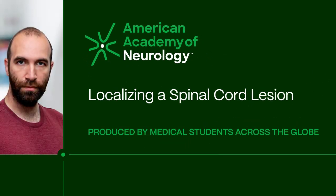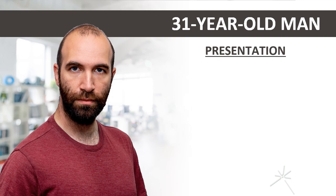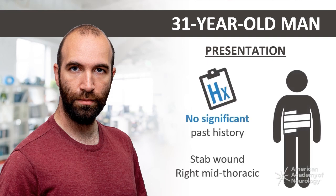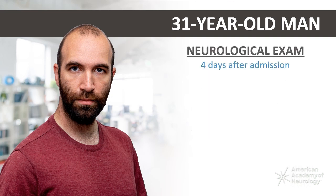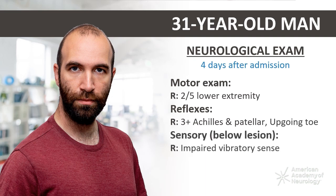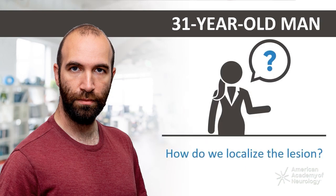Localizing a Spinal Cord Lesion. A 31-year-old man with no significant medical history presents to the hospital following a stab wound to the right mid-thoracic region. A few days later, once the patient is stabilized, a neurological exam shows 2 out of 5 strength in the right lower extremity, 3-plus patellar and Achilles reflexes, and an up-going right toe. Sensory exam shows impaired vibratory sensation below the level of injury on the right side and loss of pinprick and temperature sensation on the left. How do we localize the lesion?